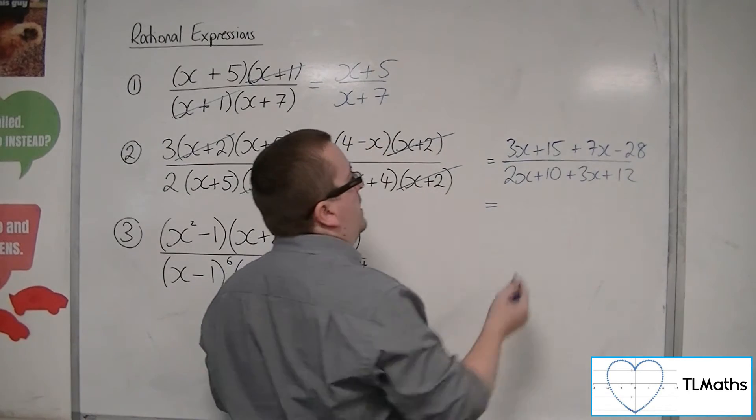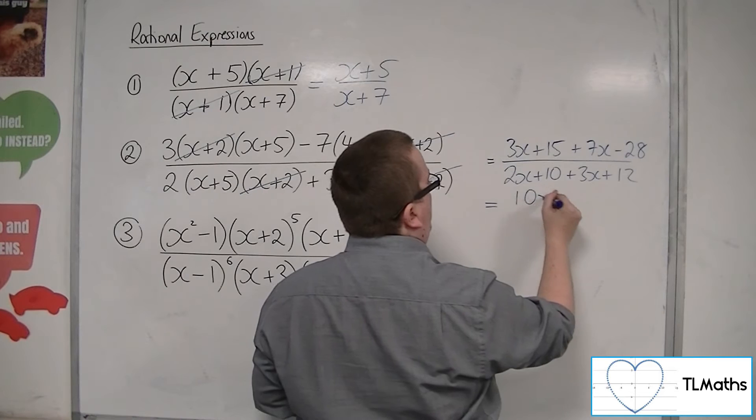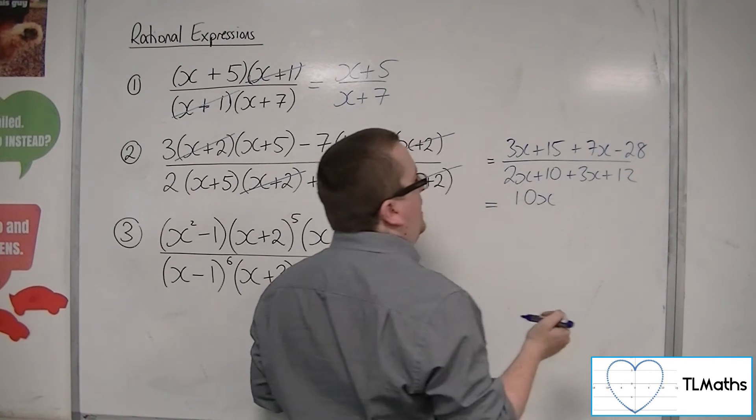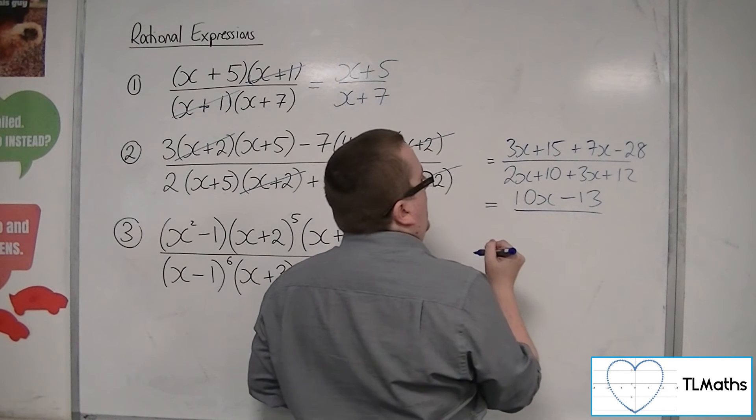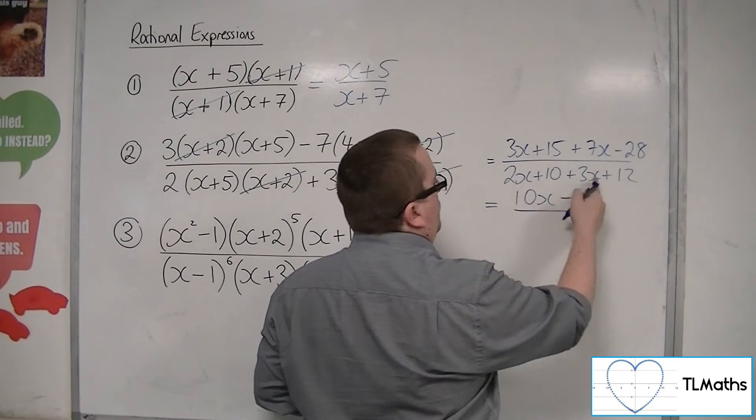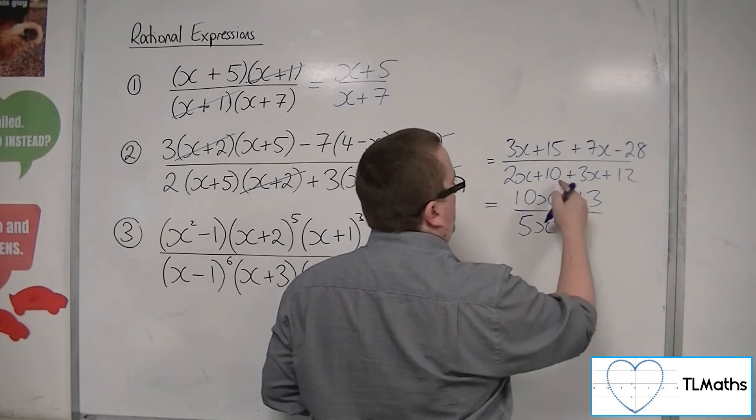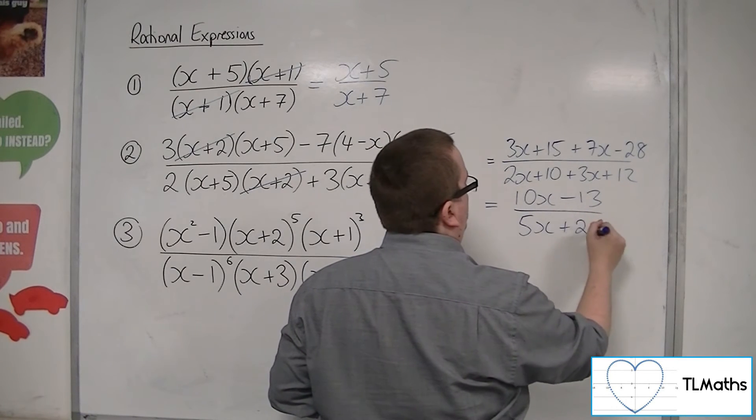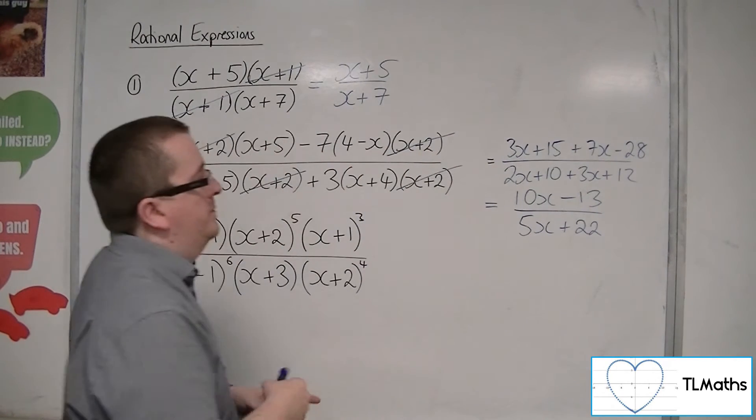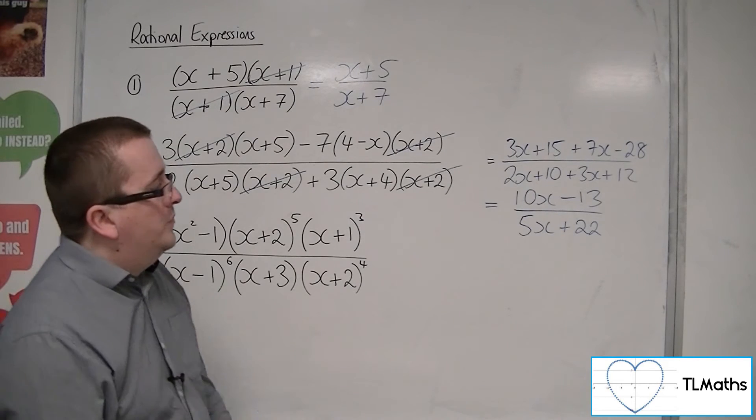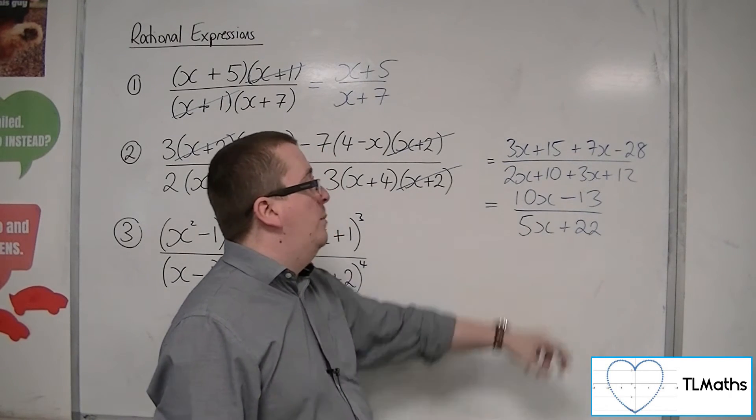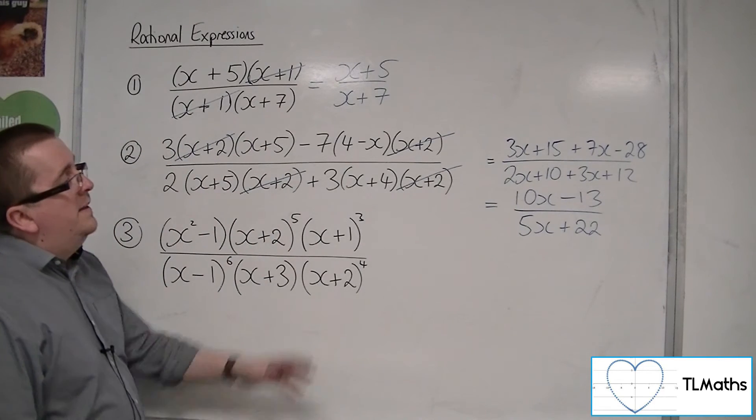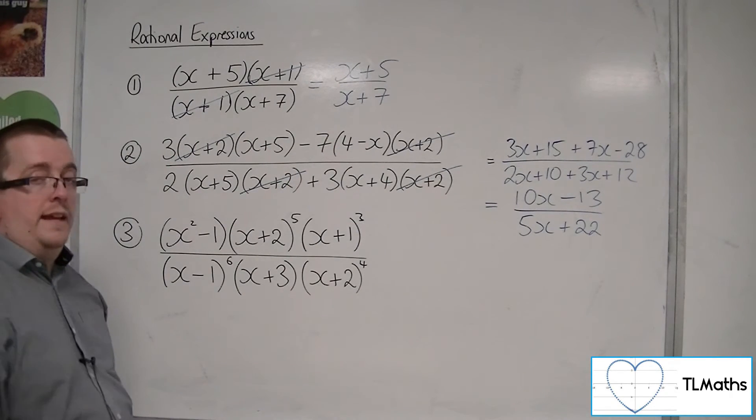So simplifying, 3x plus 7x is 10x. 15 take away 28 is minus 13. And I have 5x plus 22 in the denominator. Now, I would then check, is there something I can divide through top and bottom? Is there a common factor to the numerator and denominator? There isn't in this case, so I can't cancel it any further.